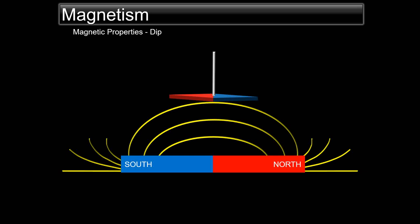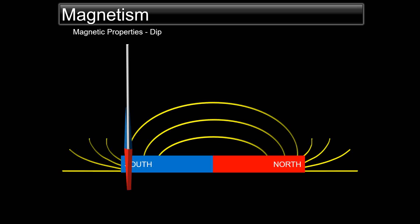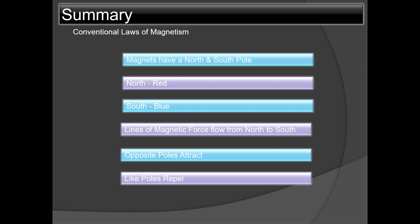Magnetic dip results from the tendency of a magnet to align itself with the lines of force. Since the Earth's magnetic lines of force are not parallel to the surface, the north end of a compass needle always points downwards in the northern hemisphere, indicating a positive dip, and upwards in the southern hemisphere, indicating a negative dip. Magnetic lines of force never intersect one another — they emit from one pole and enter the other. As the needle approaches the pole, it starts to become vertical.